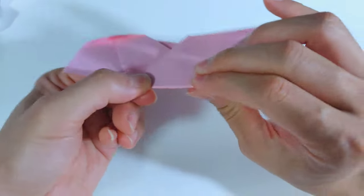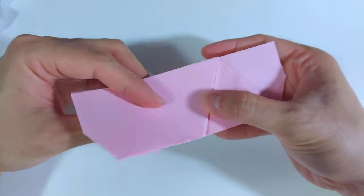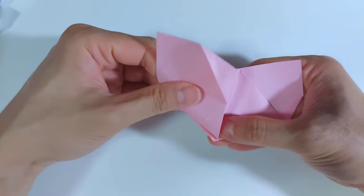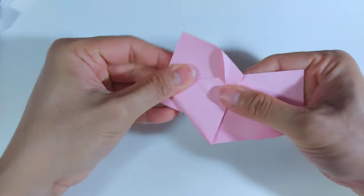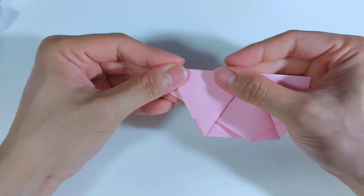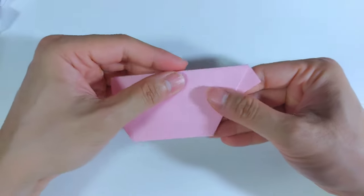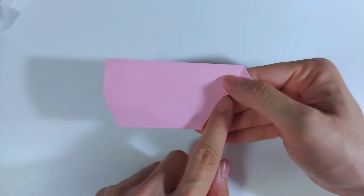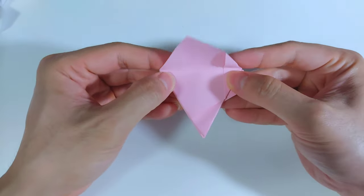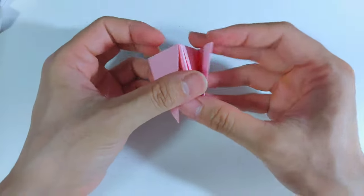Now I have to press this and fold this edge to this edge here, and this one fold down. Now it will be a triangle. Turn over, do the same. Fold this edge to this edge, and fold this down, and this is one unit.